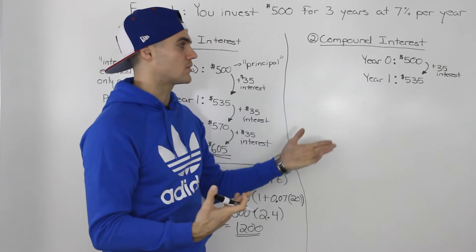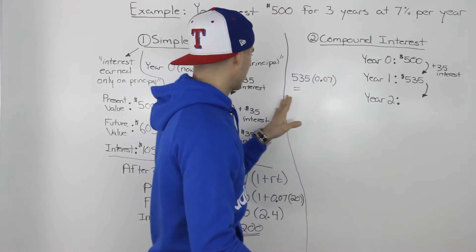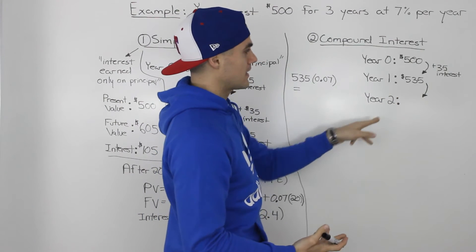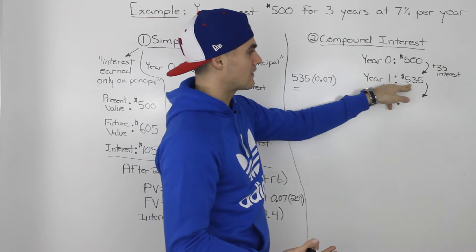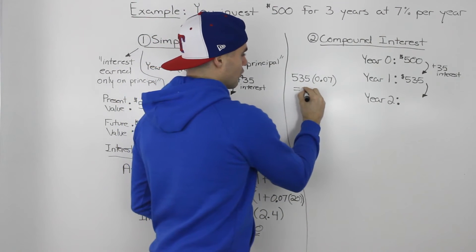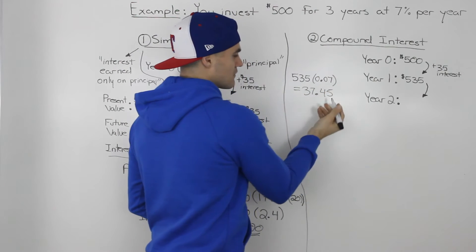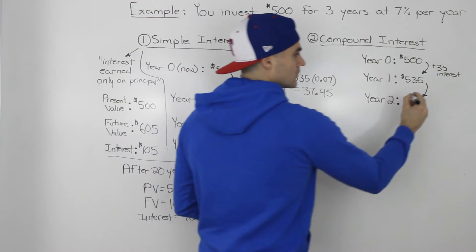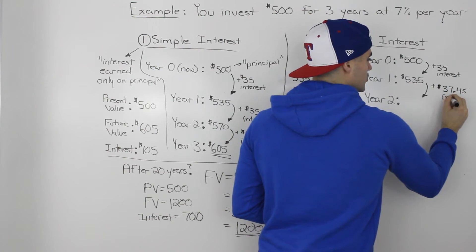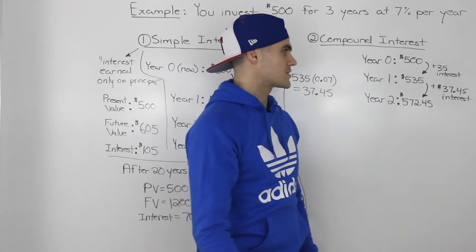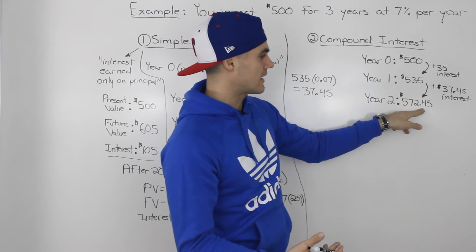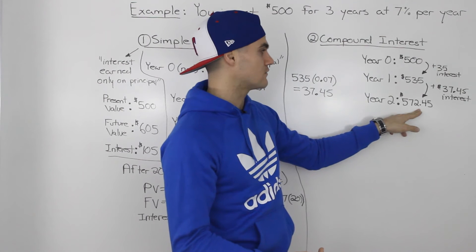In the second year, it's different. Unlike simple interest where you make $35 every year, with compound interest the interest is based on the new bank account balance of $535. So you take $535 and multiply by 7%, giving you $37.45. Adding that $37.45 to $535, you get a new balance of $572.45 at the end of the second year.